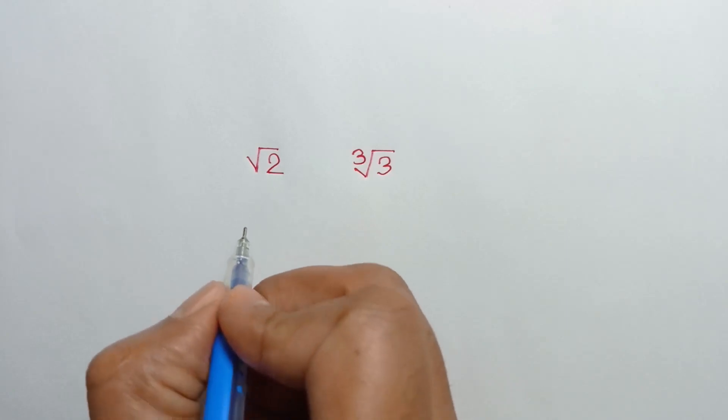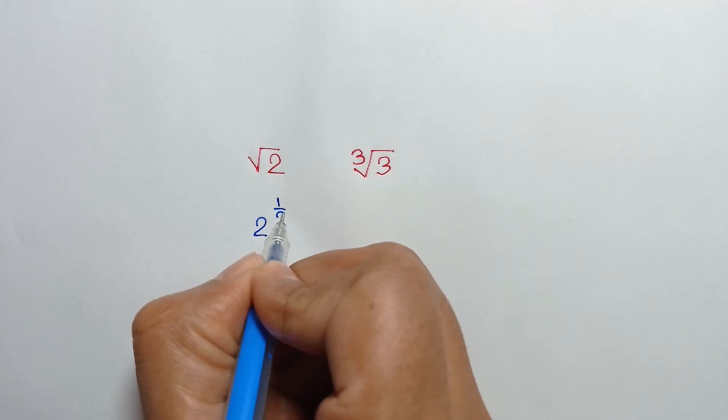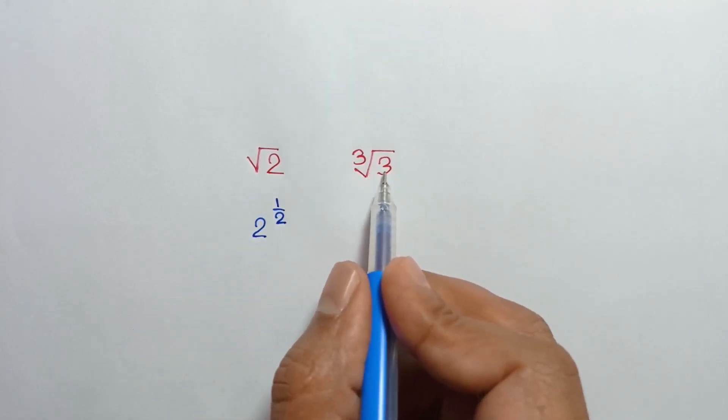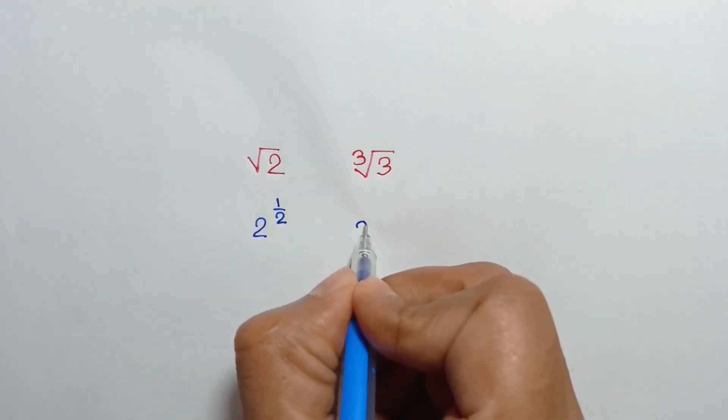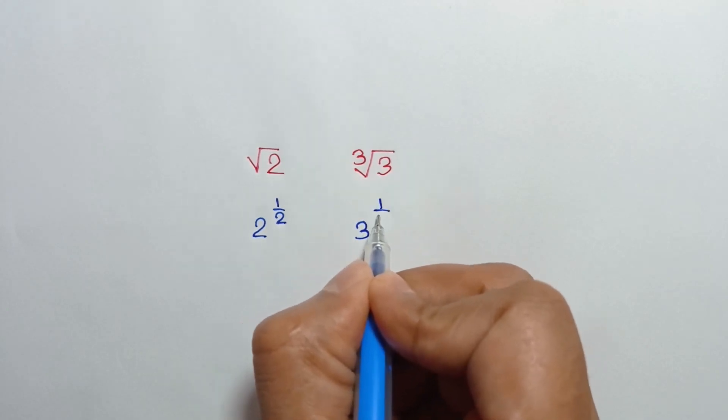Square root of 2 can be written as 2 to the power 1 over 2, and cube root of 3 can be written as 3 to the power 1 over 3.